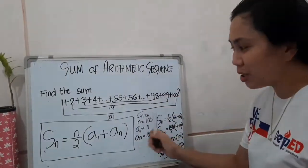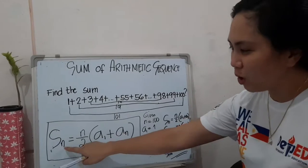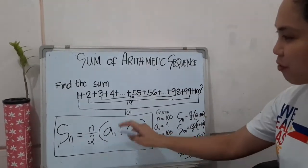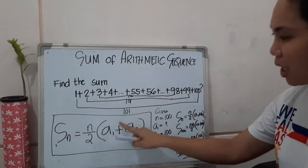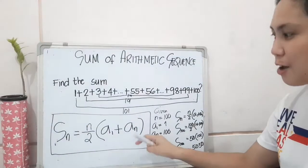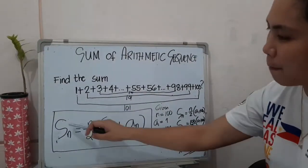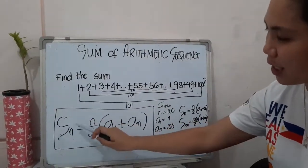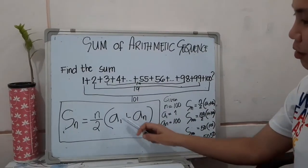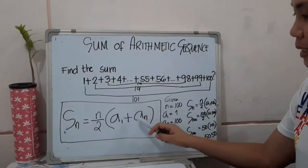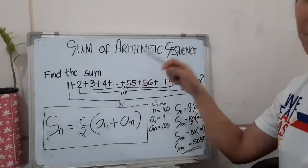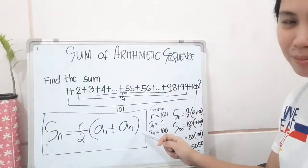Take note: we can only use this formula — S sub n equals n over 2 multiplied by the first term plus the last term — if we have both the first term and the last term.